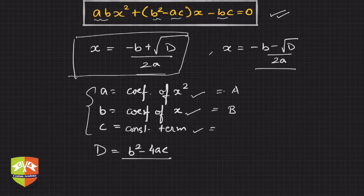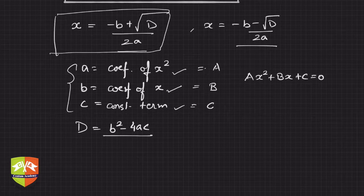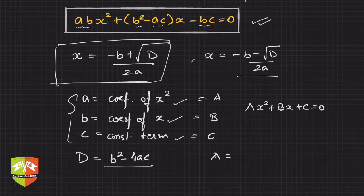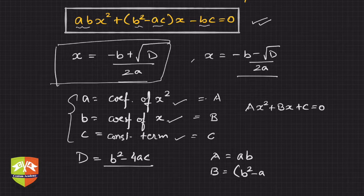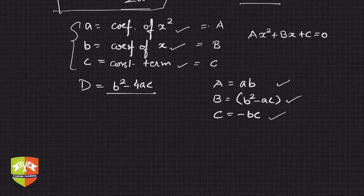We say capital A, capital B, and capital C where the equation is Ax² plus Bx plus C equals zero. So in this question, capital A is ab, capital B is b² minus ac, and capital C is minus bc. These are the three values. Now let's find the discriminant. The discriminant is B² minus 4AC.